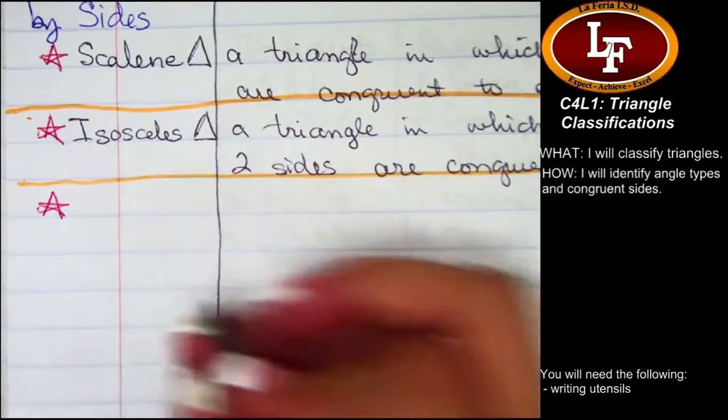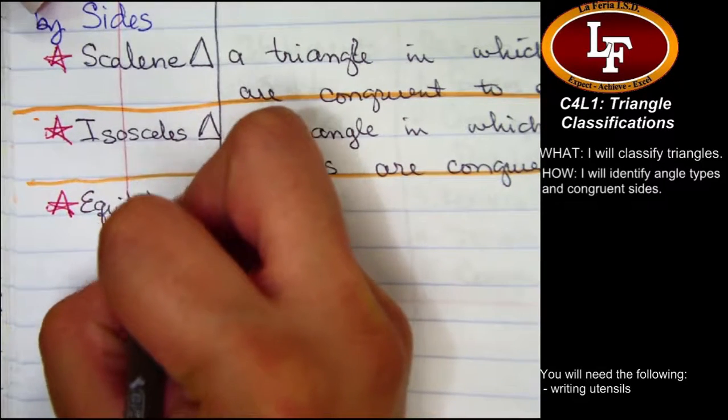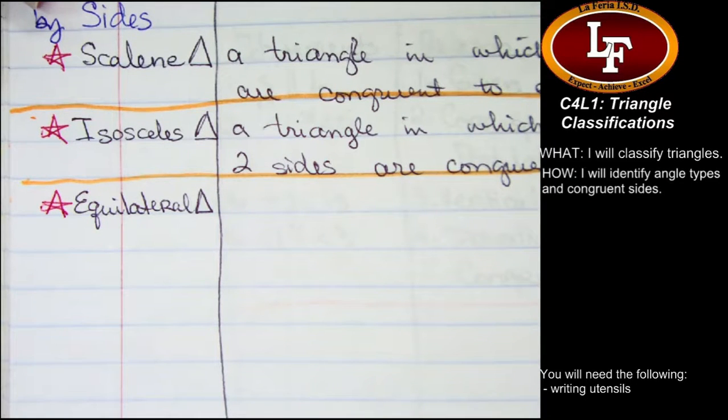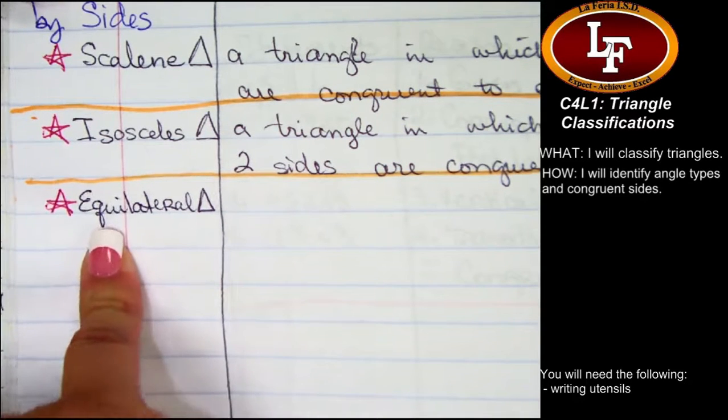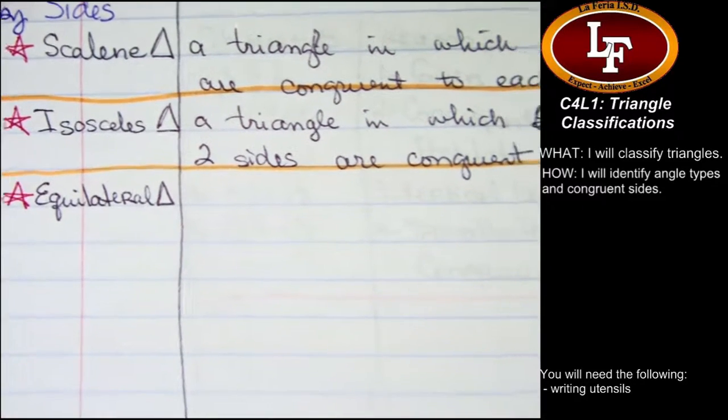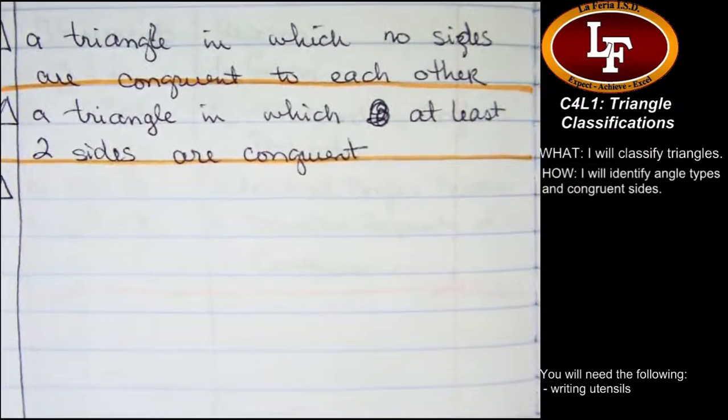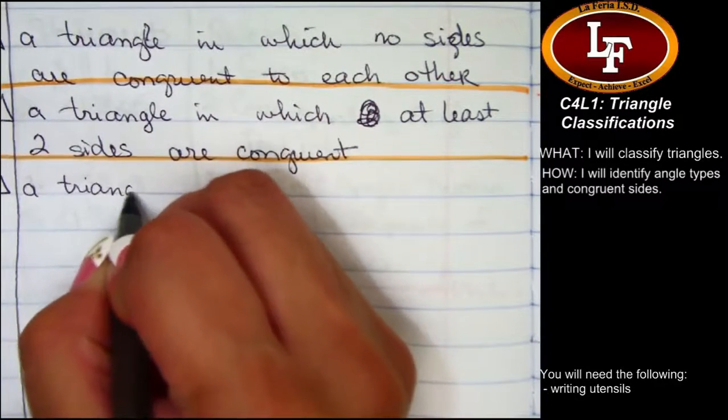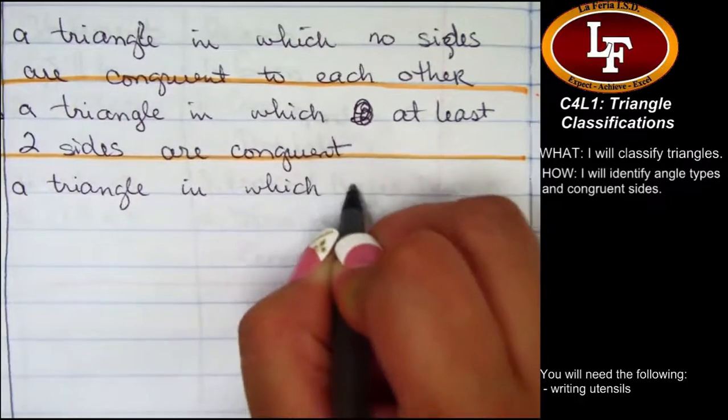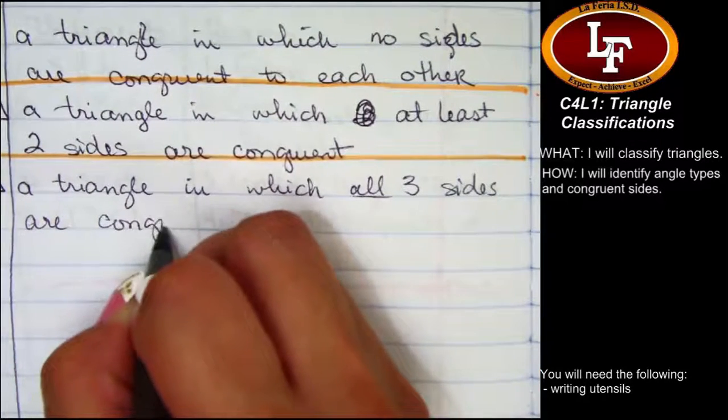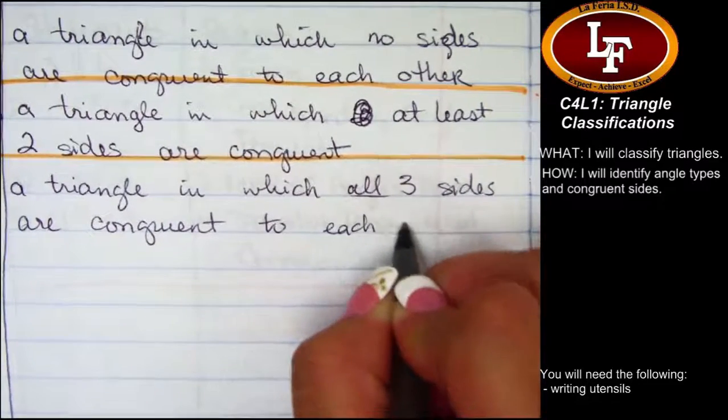Our third and final side classification is the equilateral triangle. This word is pronounced equilateral. I've heard of equilateral before. Now, equilateral comes from two word parts. This first word part, equa, which means equal, or the same. And the second one is lateral. Which means side. For my Spanish speakers, think of lateral almost like lado, side. For my football players, a lateral pass is a pass thrown to the side. An equilateral triangle is a triangle in which all three sides are congruent to each other.